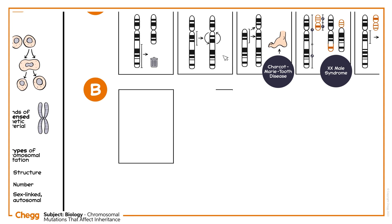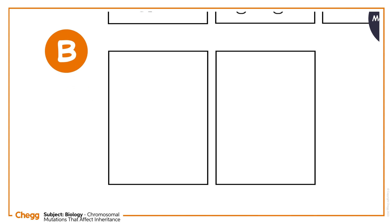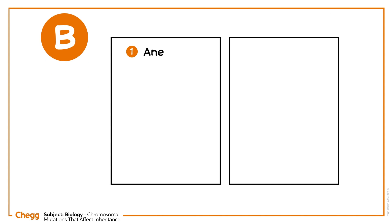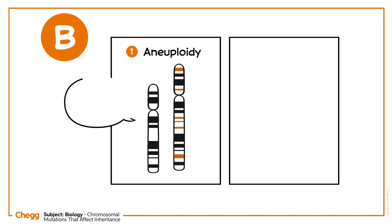Based on the chromosomal number, there are two types of mutation. Aneuploidy is characterized by having an abnormal number of chromosomes occurring due to the non-disjunction of two chromosomes of a homologous pair.